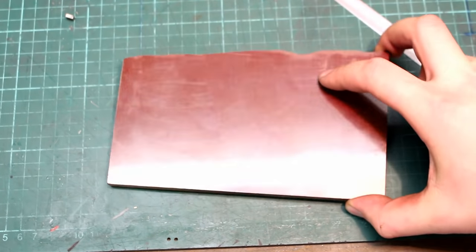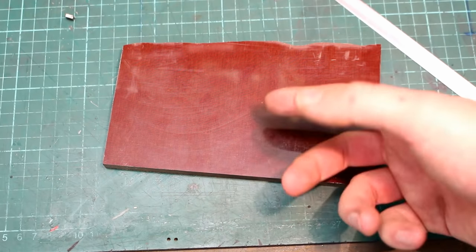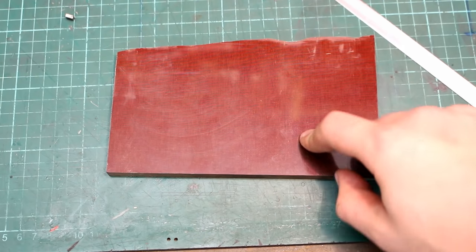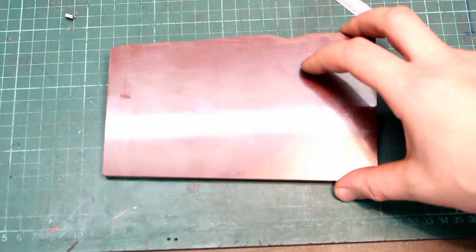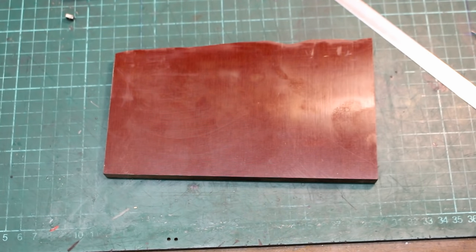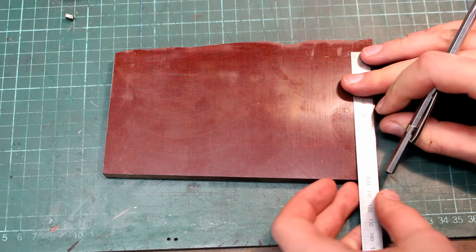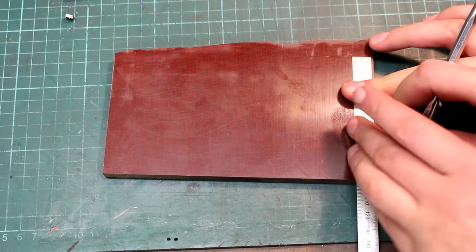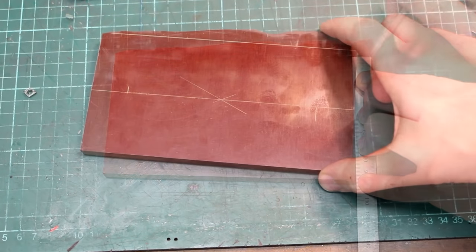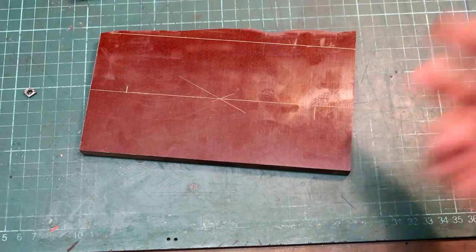I have a piece of phenolic. This is the stuff with the linen in it. It's pretty tough and I like to use it as a material for templates. And let's get the light out of the way. We need a strip of about 95 millimeters width. That's our layout, that's all we need.